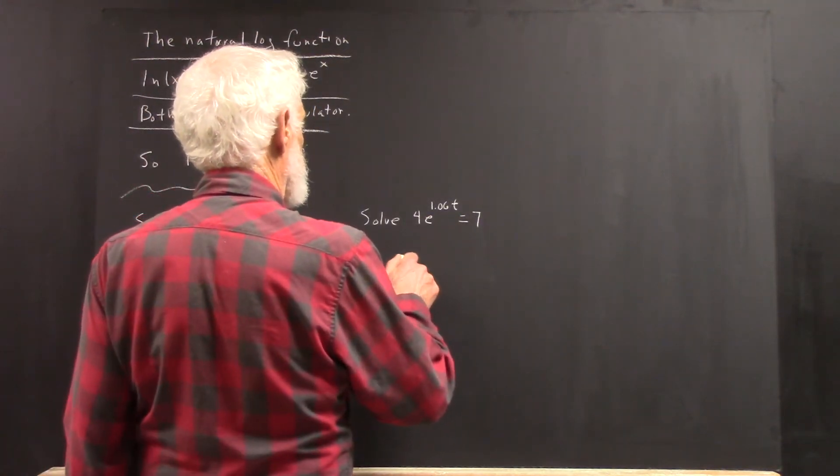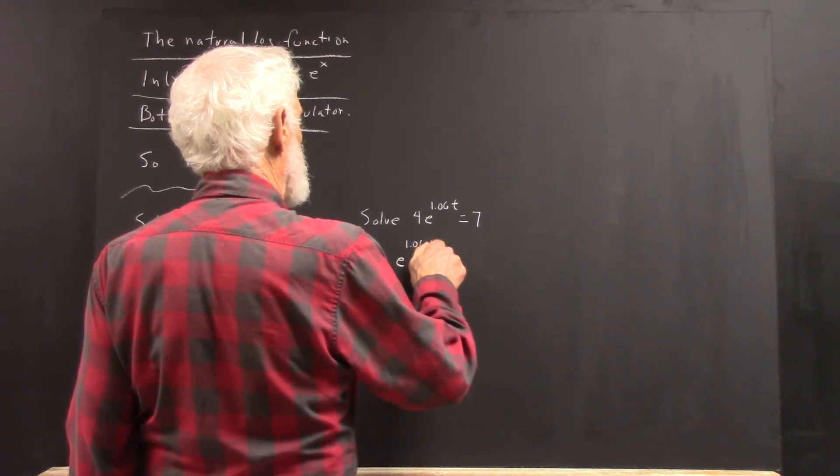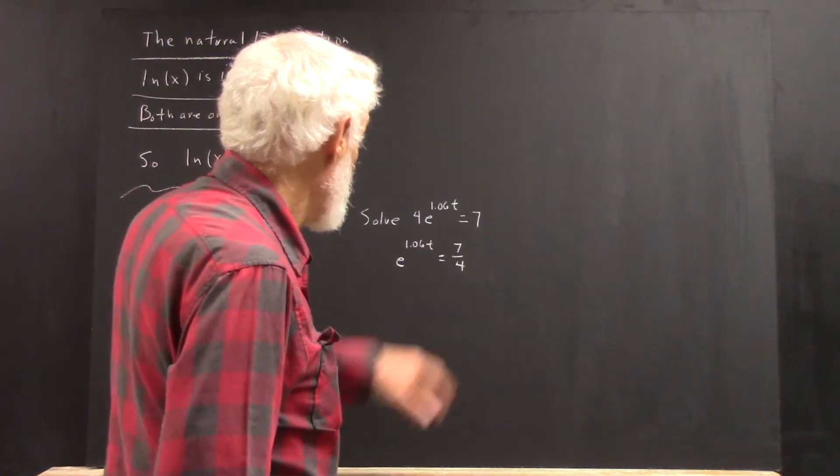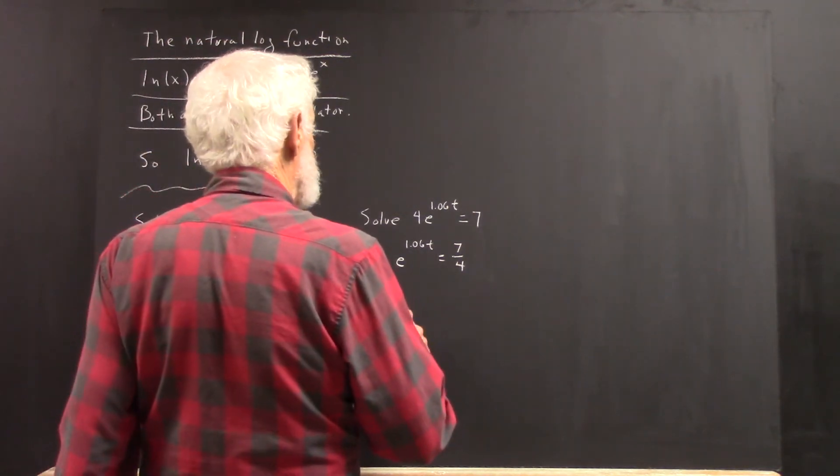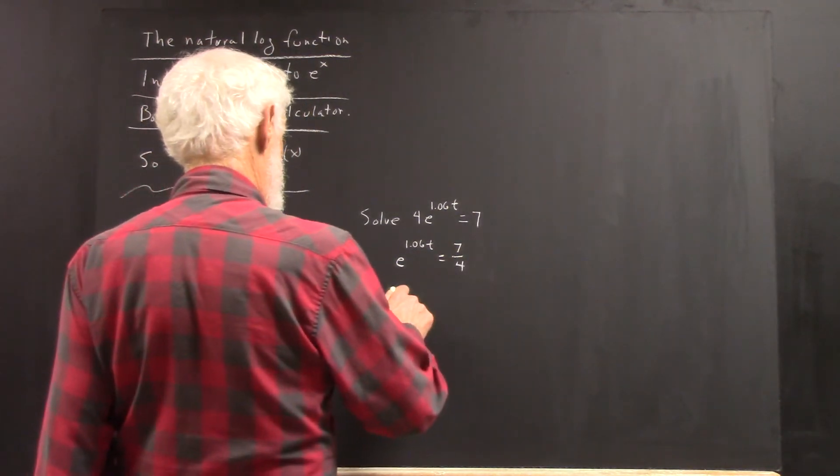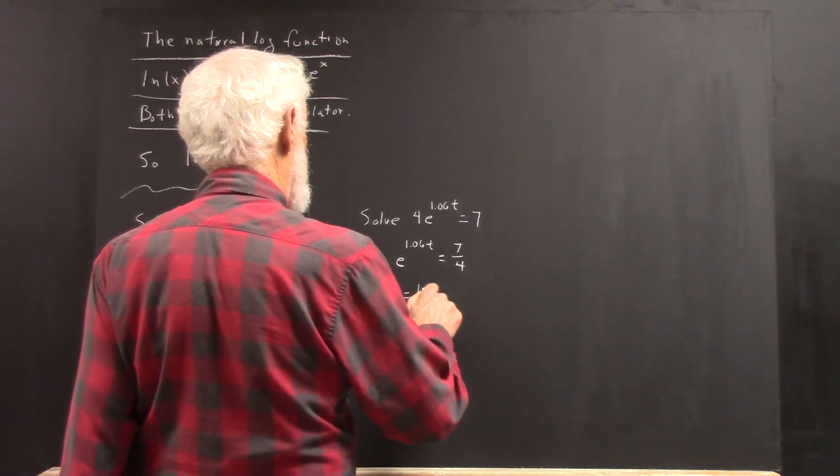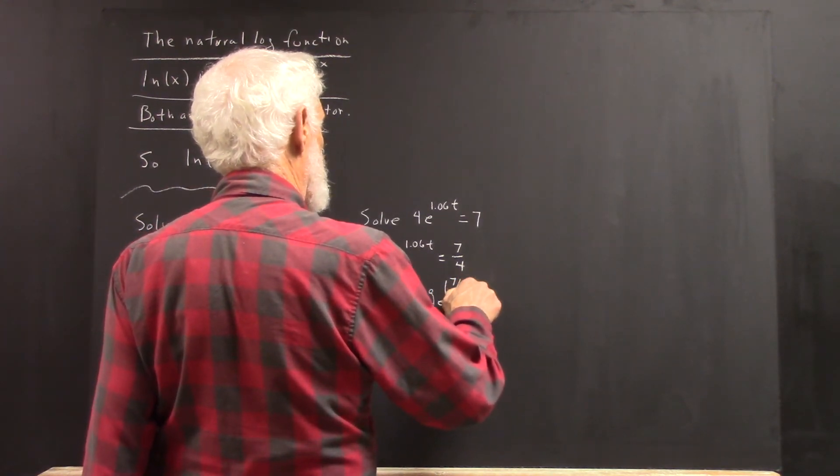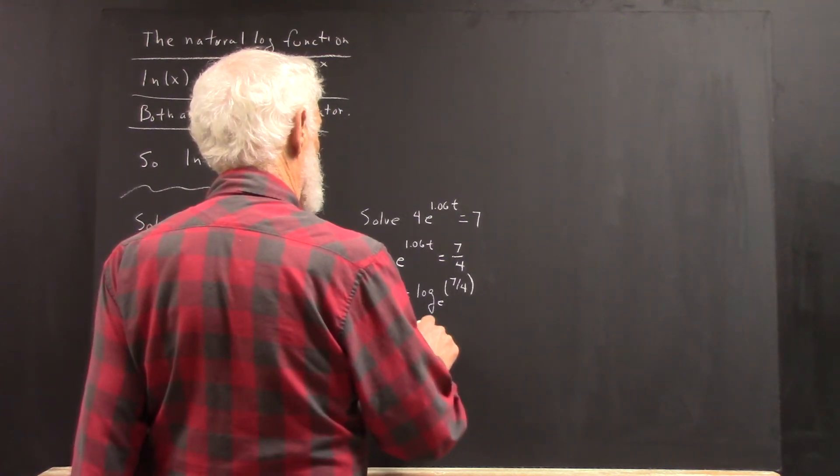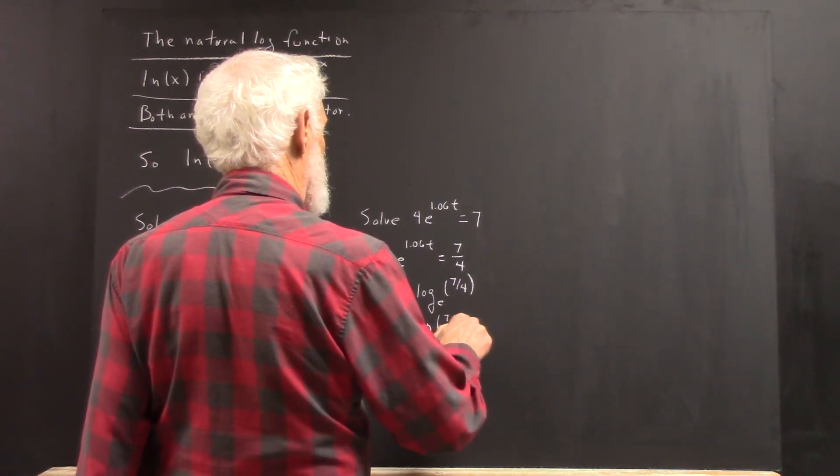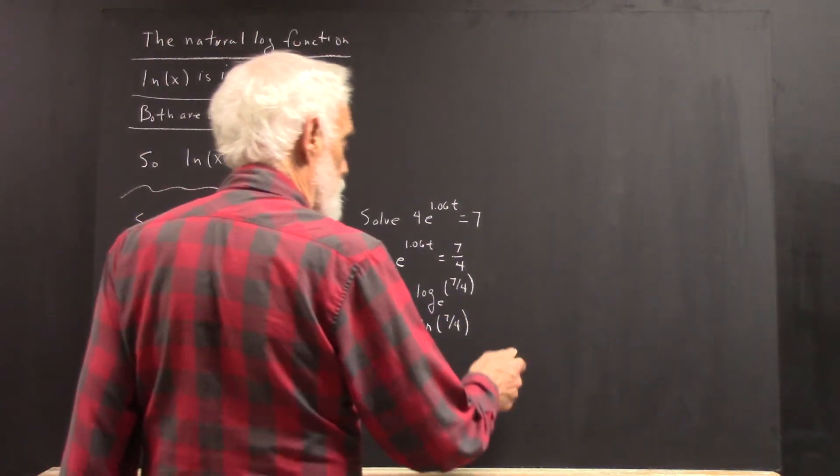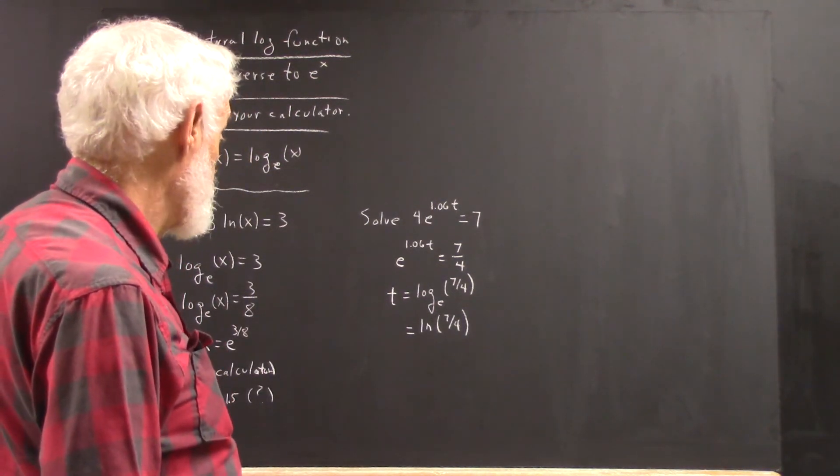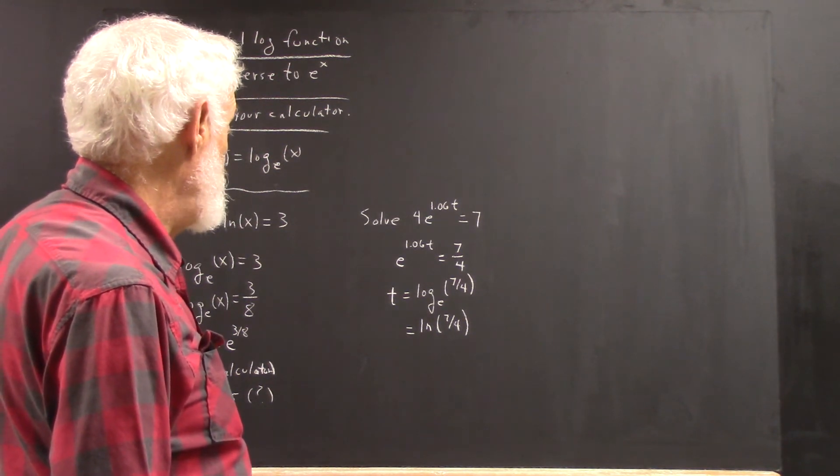So we get e to the 1.06t dividing both sides by 4. That equals 7 fourths. Then, converting this to log notation, find that t is going to be log to the base e of 7 fourths, which of course is the natural log of 7 fourths. And then you can use your calculator to calculate the natural log of 7 fourths.